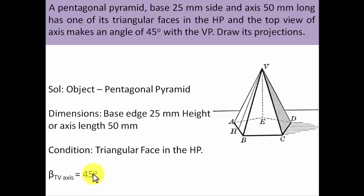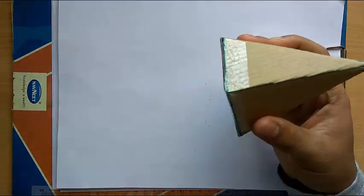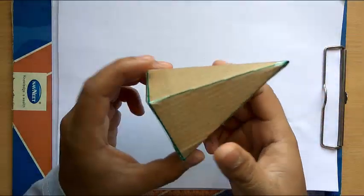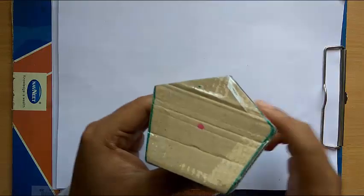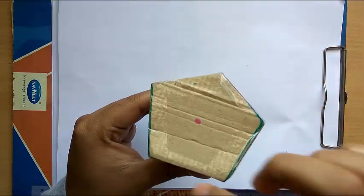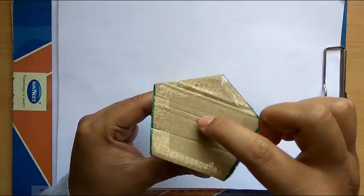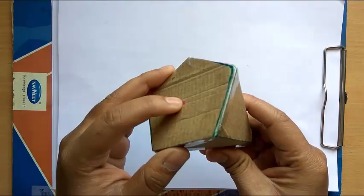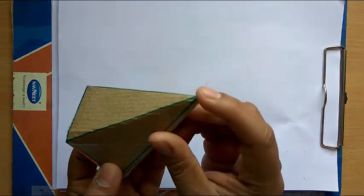In the next section I'm going to demonstrate how this pentagonal pyramid has been kept with reference to the horizontal as well as vertical plane. This is the object under consideration — a pentagonal pyramid with a pentagonal base. The center point of this pentagon is the base of the axis, which runs from the base center up to the apex.